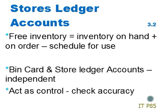Free inventory is the inventory on hand, plus any inventory on order, less any inventory scheduled for use. Because bin cards and store ledger accounts are independent from each other, they can act as a control to check the accuracy of the records. The two inventory records should have the same quantities; if they don't, then the differences should be investigated.